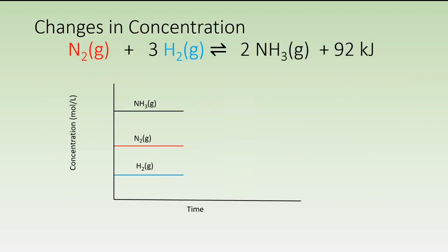The first look we're going to have is what would happen with changes of concentration. The system by the graph right now is at equilibrium because the concentrations are unchanged over the course of time. Now, let's say that a stress is imposed on the system — an immediate increase in the concentration of nitrogen. Because equilibria happen in closed systems, we would have an injection port of some sort, take an amount of nitrogen gas, and insert it in one shot into the system. This would cause the particles of nitrogen to increase but the volume to stay the same, so just the concentration of nitrogen in that system would jump immediately.